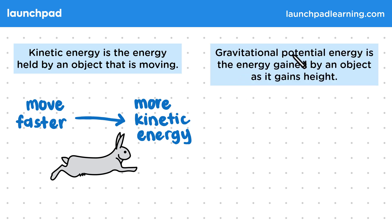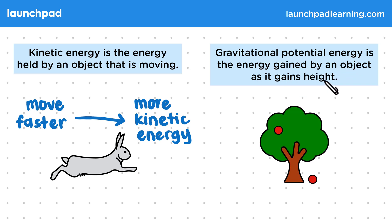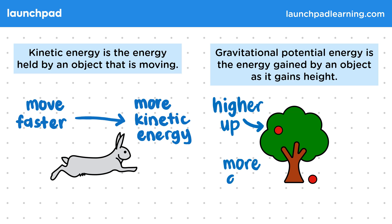Gravitational potential energy is the energy gained by an object as it gains height. So if we imagine a tree with an apple in it and an apple on the ground, the apple in the tree is higher up, so it has more gravitational potential energy, which we have abbreviated here as GPE.